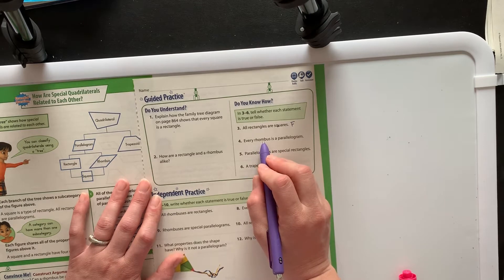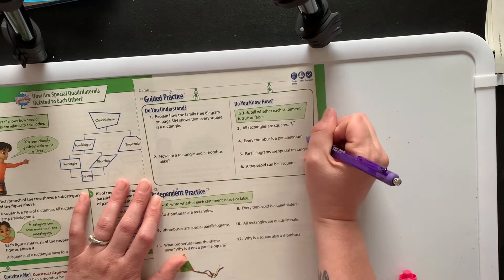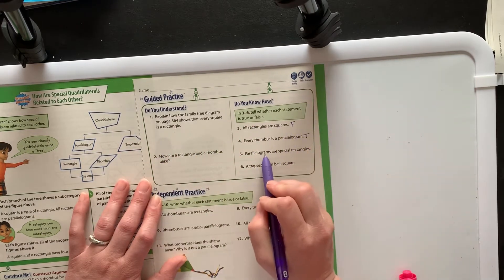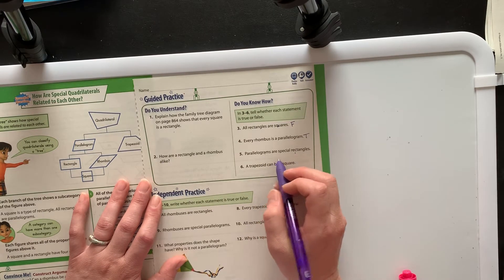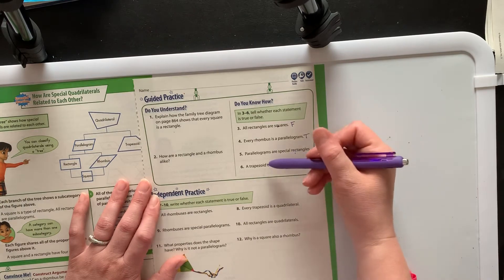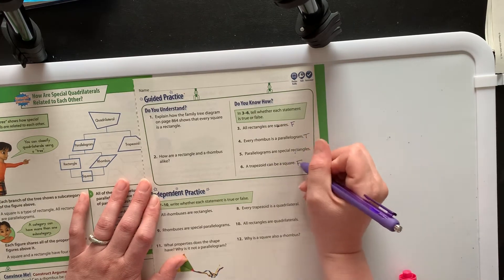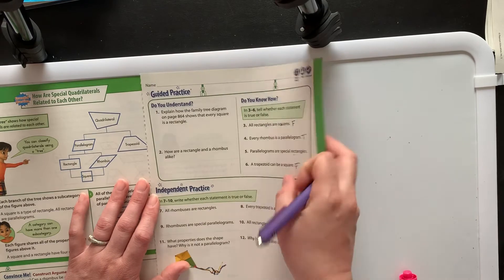Every rhombus is a parallelogram. That is true. Parallelograms are special rectangles. Well, they're all special. I actually don't know what to write on that one. A trapezoid can be a square. No way. That's nonsense.